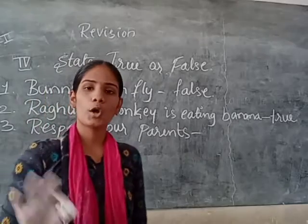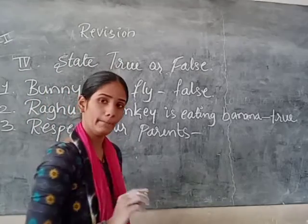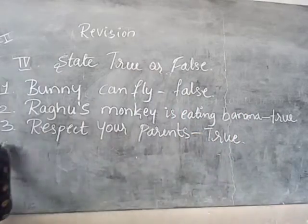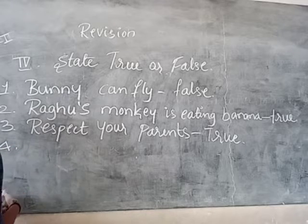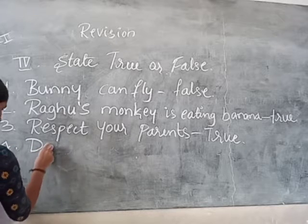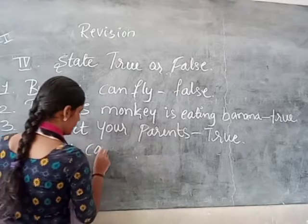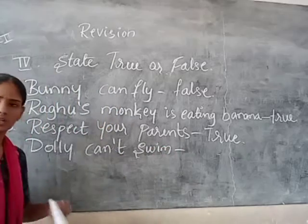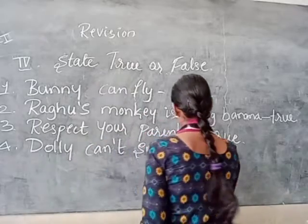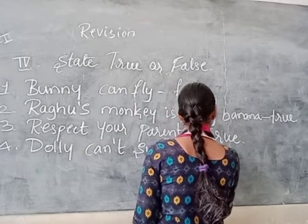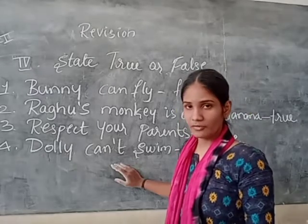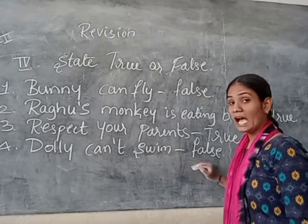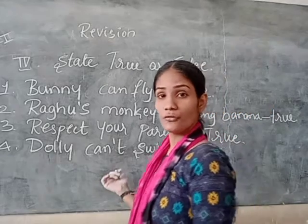Respecting the parent — is it good or bad? It is true. So the answer is true. Next: Dolly can't swim. Dolly can't swim — no, so it is false. If the statement were 'Dolly can swim' it would be correct, but 'Dolly can't swim' is not correct, so it is false.